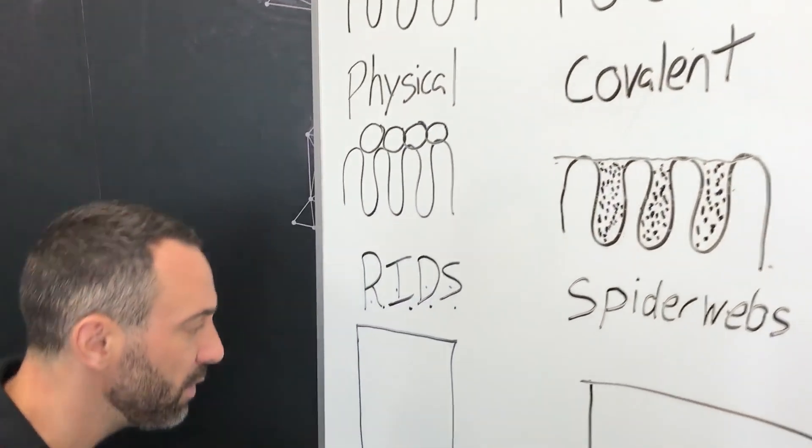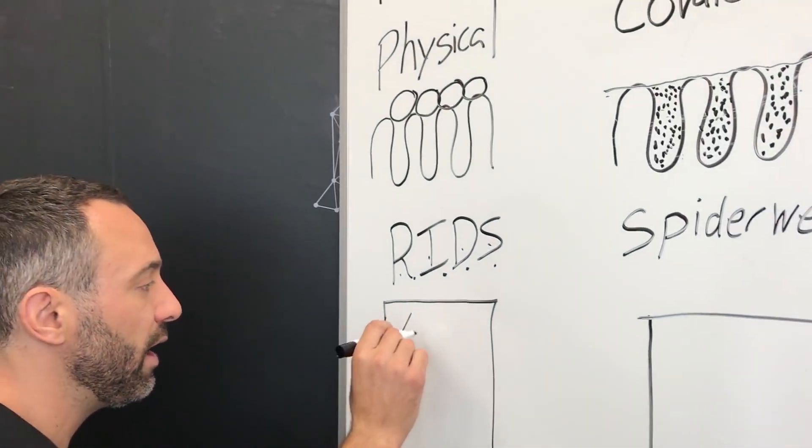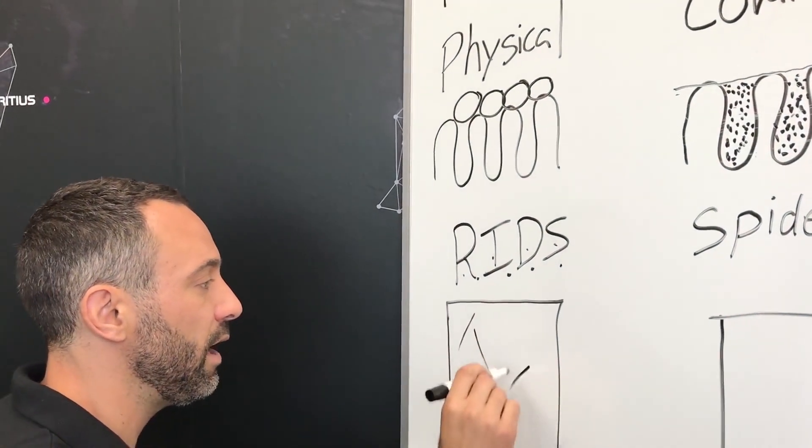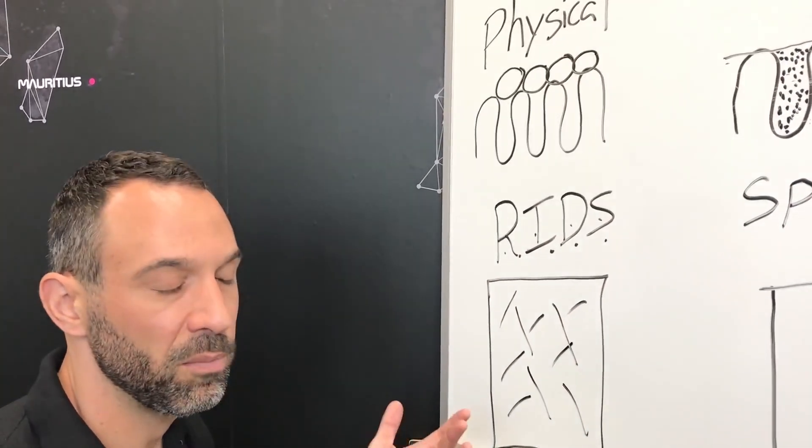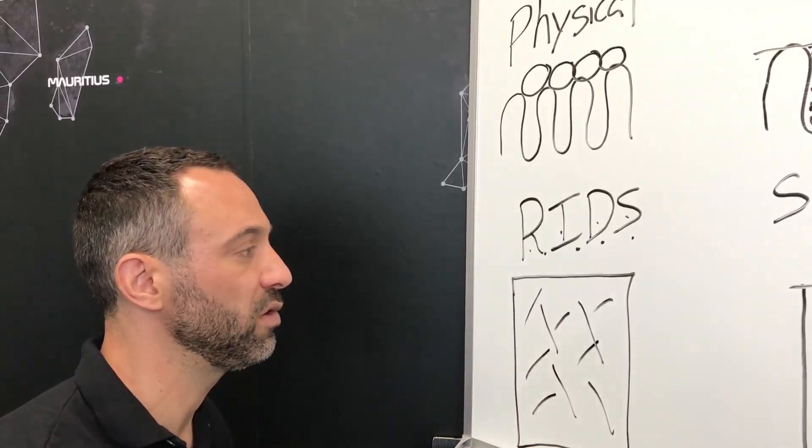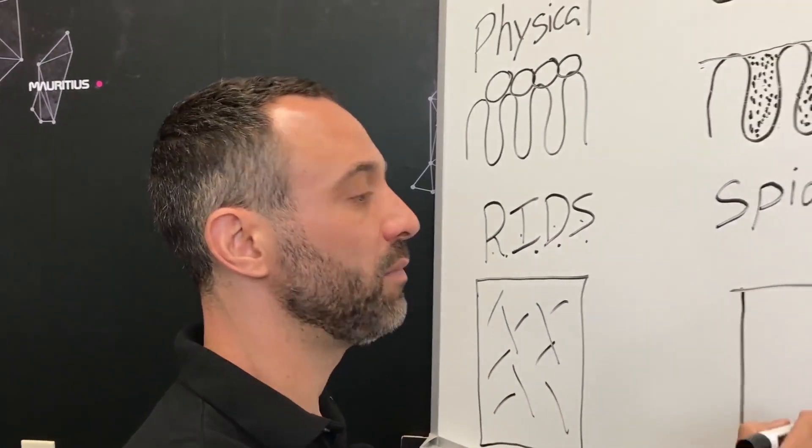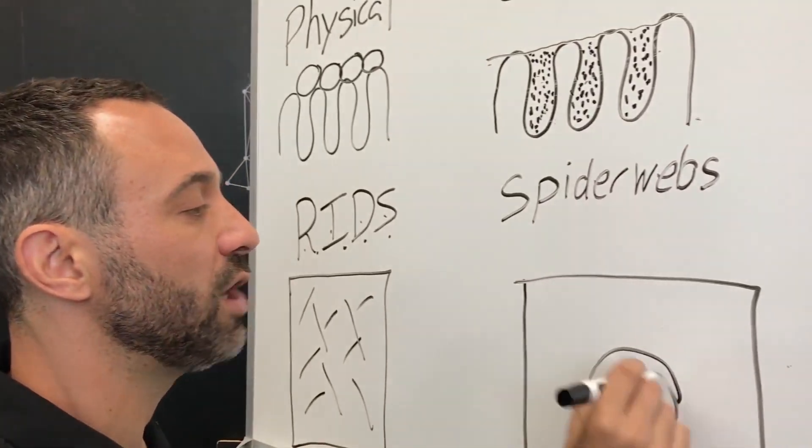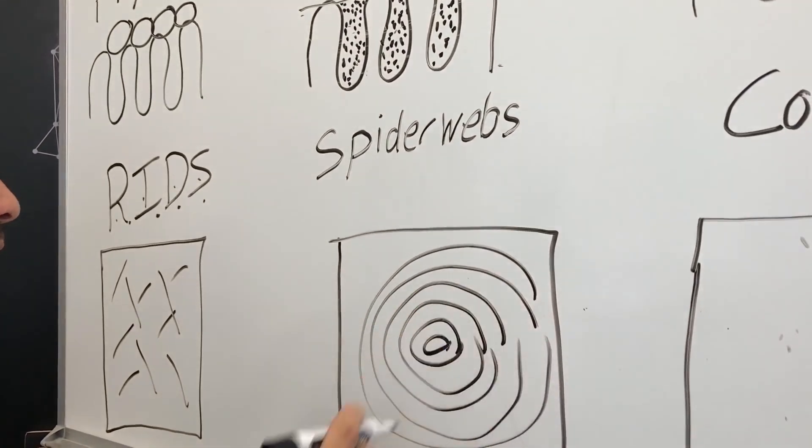So RIDS stands for Random Isolated Defects and Scratches. What I mean by that is, over time, as you wash the car, drive it, debris flies by on it, you'll get random scratches. And this drawing here is supposed to depict basically a one foot by one foot square on your car. The more RIDS you get, the more when you shine the sun on it or a direct beam, you see this spider webbing effect.